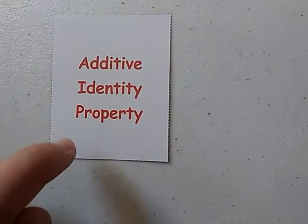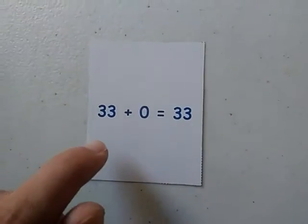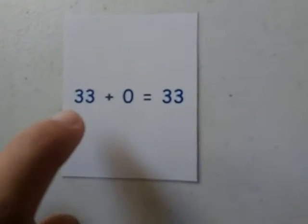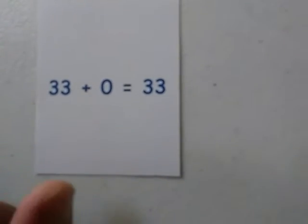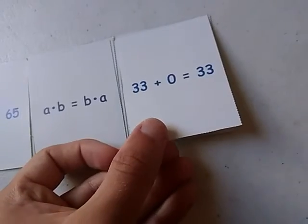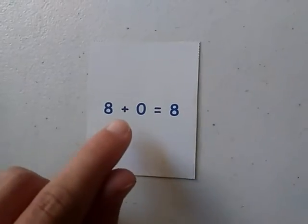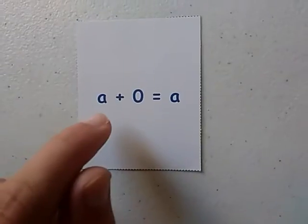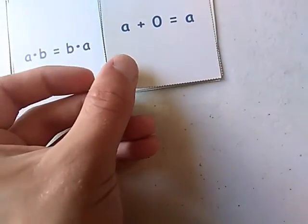Additive Identity Property. Here is an example: 33 plus 0 equals 33. Any number added by 0 equals that same number, because the addend and the sum are the same. So this card belongs with this stack. 8 plus 0 equals 8. This is another example of the Additive Identity. A plus 0 equals A — this is the variable version. And we have the Completed Stack.